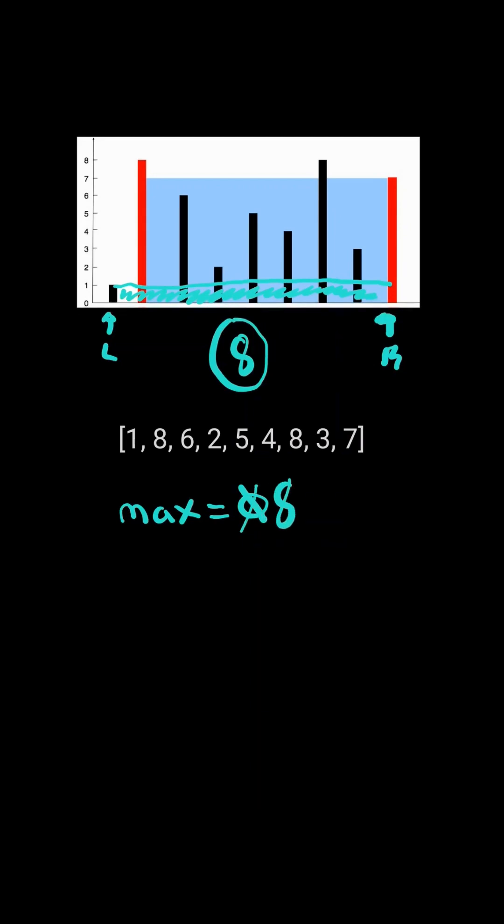We then advance the pointer that has the smallest height. In this case, we advance L and we continue.